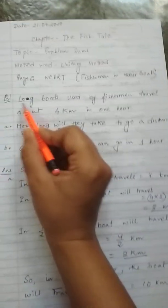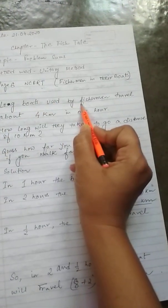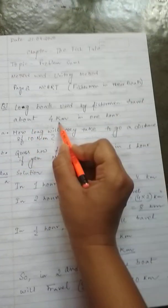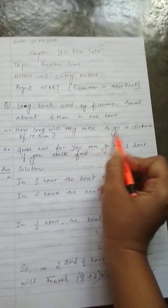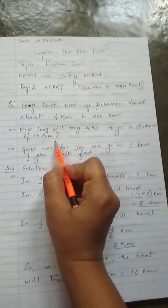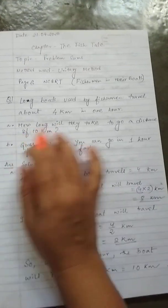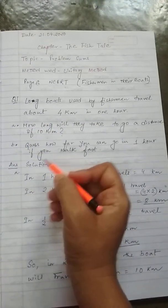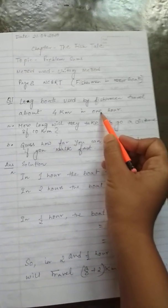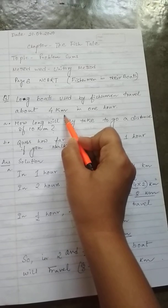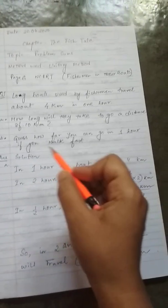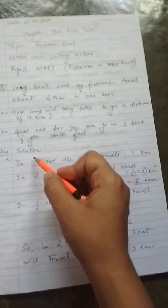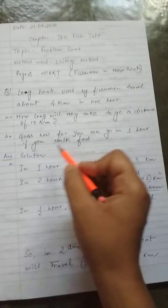Now let's read the question. It is telling that log boats used by fishermen travel about 4 km in 1 hour. How long will they take to go a distance of 10 km? Now, have you understood what they are asking about? They are asking that if the log boat in 1 hour can go 4 km, in how much time will it travel 10 km?